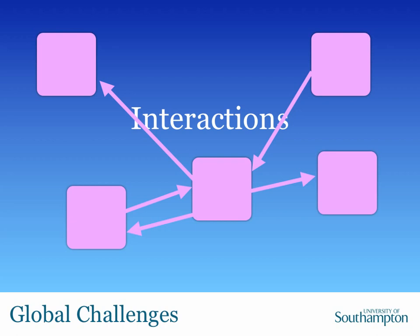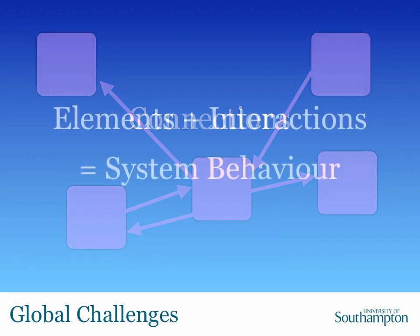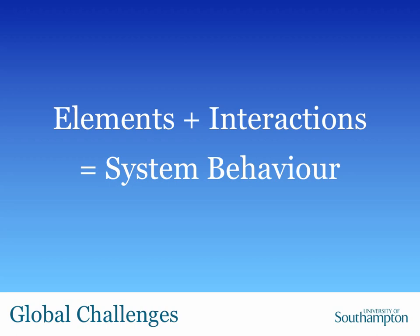These might be called interactions, they could be effects, or they could be connections — somehow the way that the individual elements of the system interact with and affect the other elements. And so, when you have elements plus interactions, you have something which leads to systems behaviour, or maybe even the system itself, or some system property.